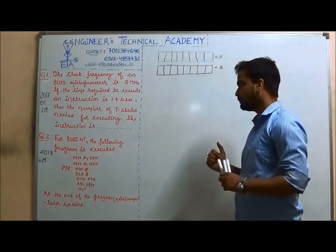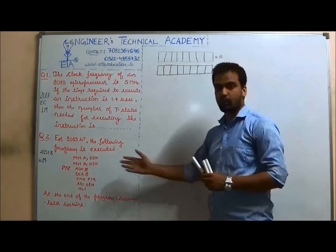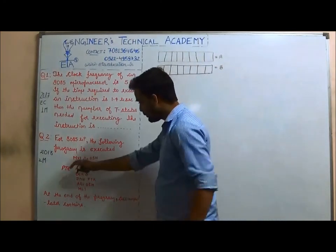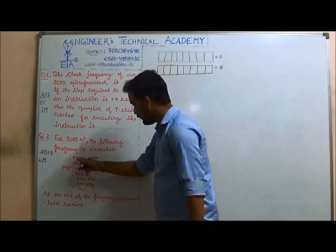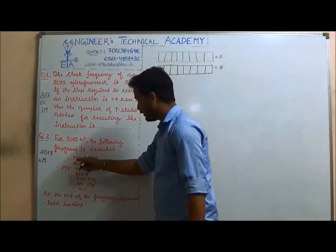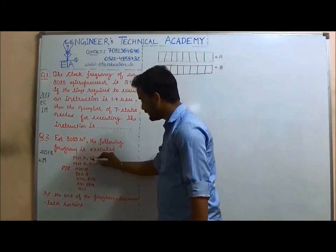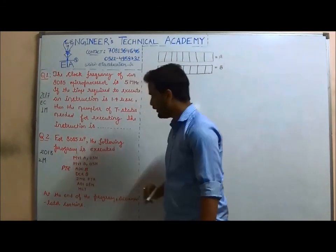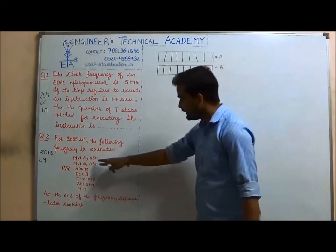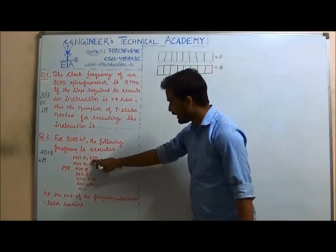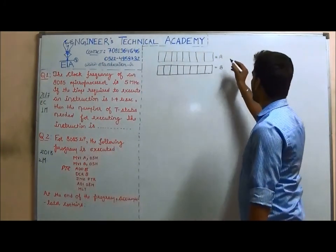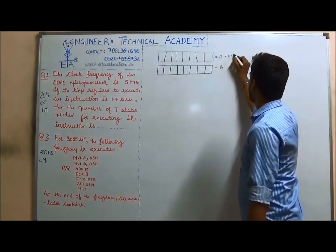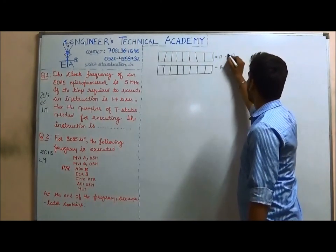Now we will start to execute this program. The first statement says MVI — that is, move immediate data 05H into A. So we move the value 05H into the accumulator.